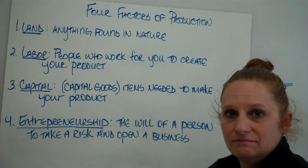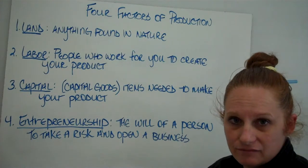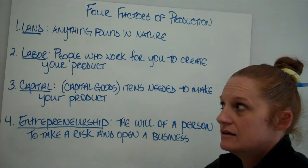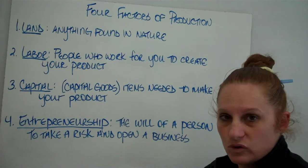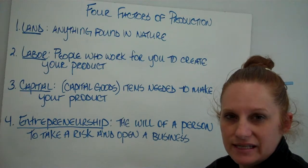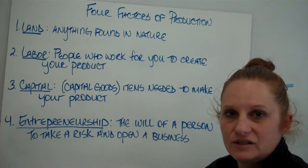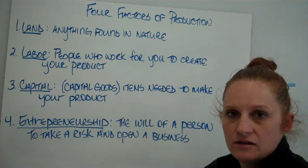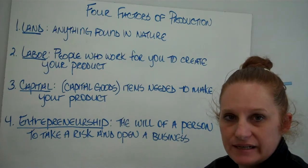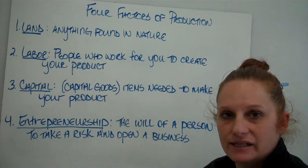To wrap up, the four factors of production are: land — natural resources; labor — all the work that goes into the product; capital — the capital goods needed to make the product; and entrepreneurship — the willingness to take a risk. Make sure that you understand these concepts because they are very important to understanding the American economy.